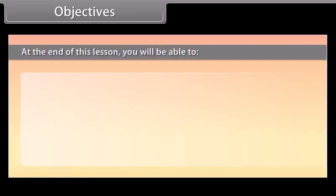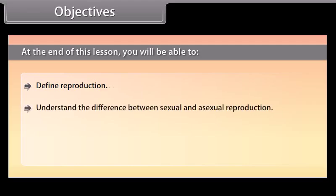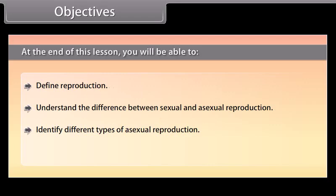Objectives: At the end of this lesson, you will be able to define reproduction, understand the difference between sexual and asexual reproduction, identify different types of asexual reproduction, and identify various events of sexual reproduction.